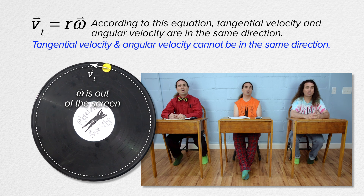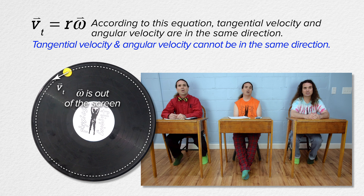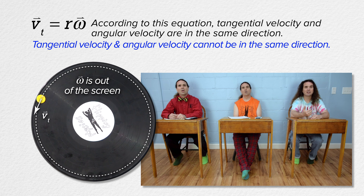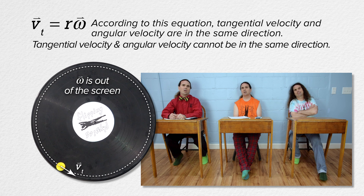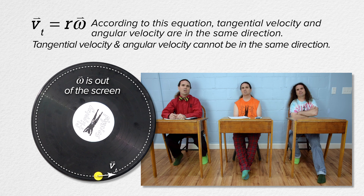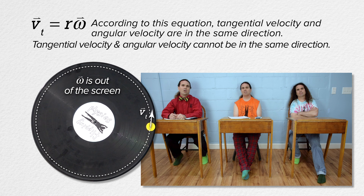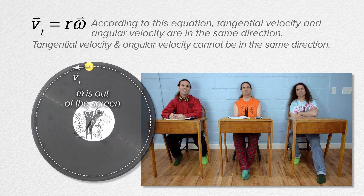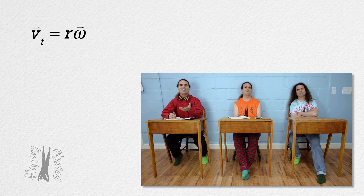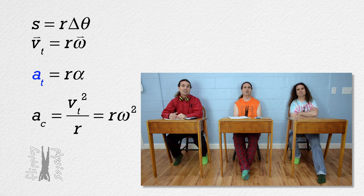So, that equation cannot refer to the vector quantities of tangential velocity and angular velocity. Actually, the direction of the tangential velocity is always changing in this example, yet the direction of the angular velocity never changes. So, vectors on those two quantities in this equation do not make sense. Oh yeah, and tangential acceleration and angular acceleration are also never in the same direction.